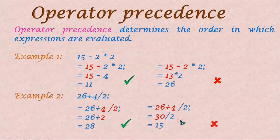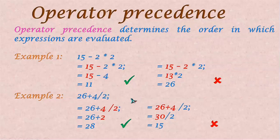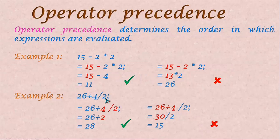When we have operators of the same precedence — for example, plus and minus, or multiplication, division and modulus all have the same operator precedence — we need to know which is to be evaluated first: from left to right or right to left. This is called operator associativity. Operator associativity rules determine the order of operations when more than one operator of the same precedence appears.